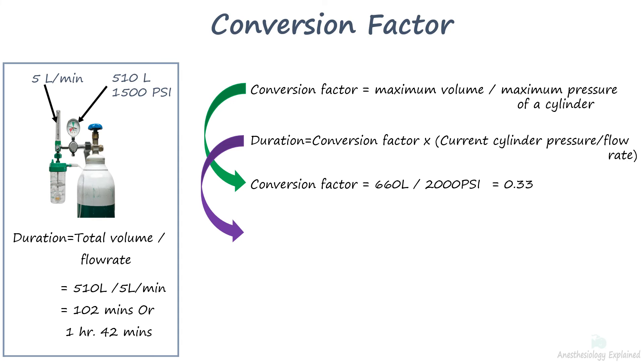Let's take the same example from the previous slide. Using cylinder gauge pressure as 1500 psi and the flow rate as 5 liters per minutes, we get 0.33 times 1500 divided by 5 is equal to 99 minutes or 1 hour and 39 minutes, which is the same time. But it is advised to use the conversion factors the manufacturers provide.